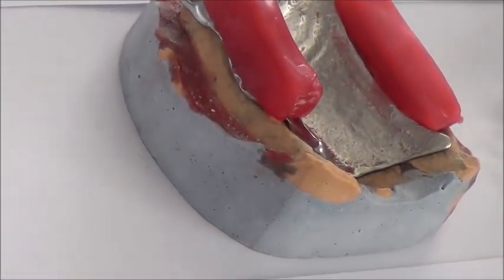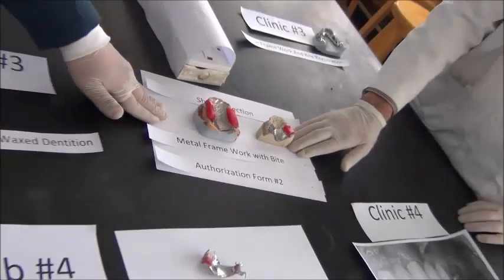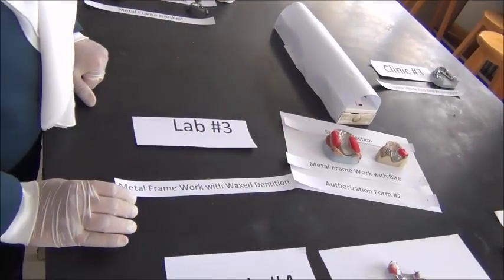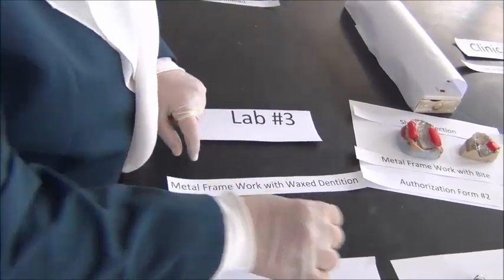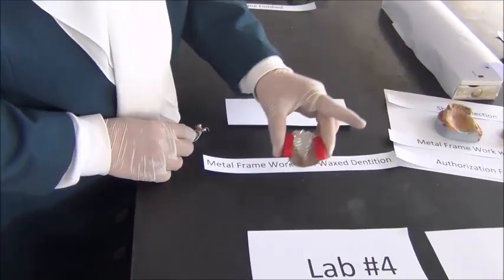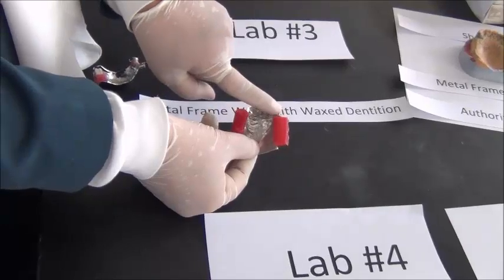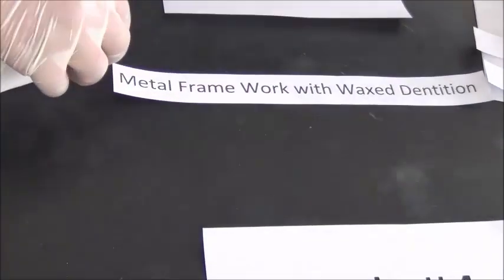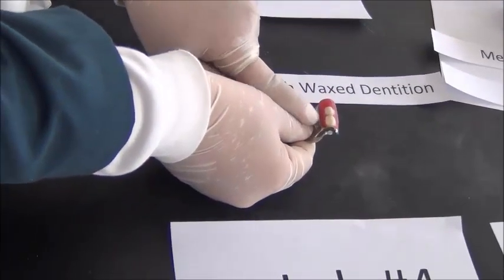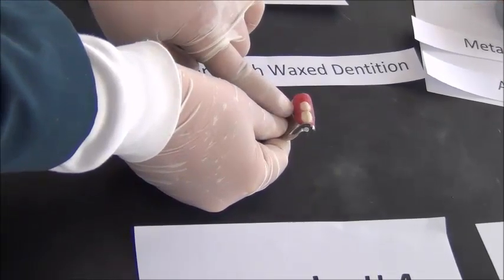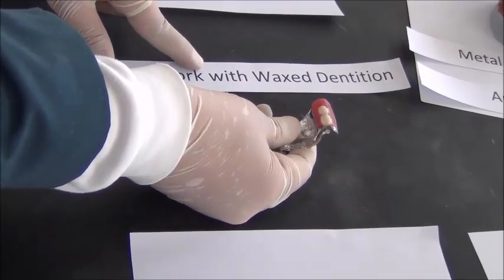We also select the shade for the teeth we intend to use, so we do a shade selection. We write down the authorization form containing all of the information about the teeth we would like to choose — their shape, shade, and size. This is all sent back to the lab, authorizing them to finish off the acrylic. In lab three, the technician receives the metal framework and, using the bite record, begins placing teeth. Once the teeth are in place, we call that a metal trial denture — it has the wax, teeth, and the acrylic.